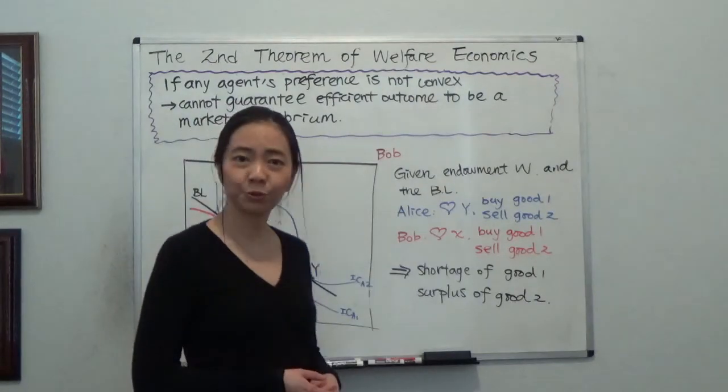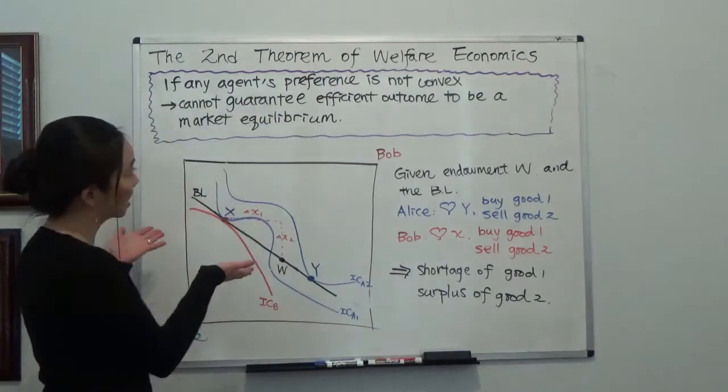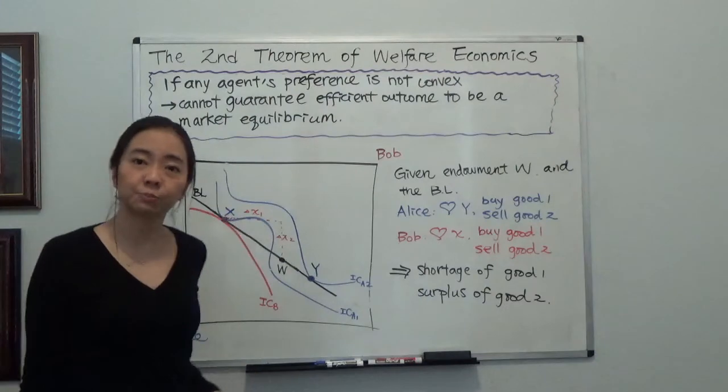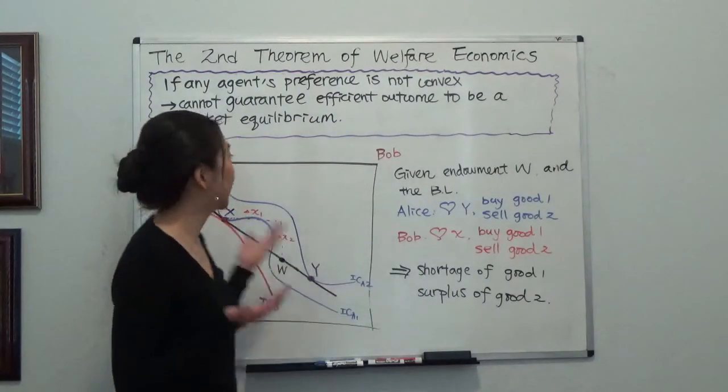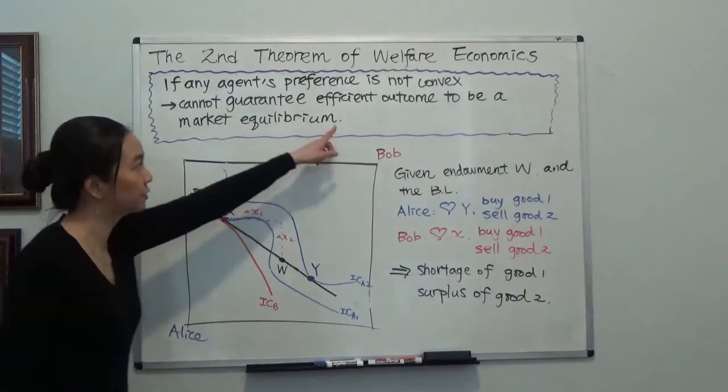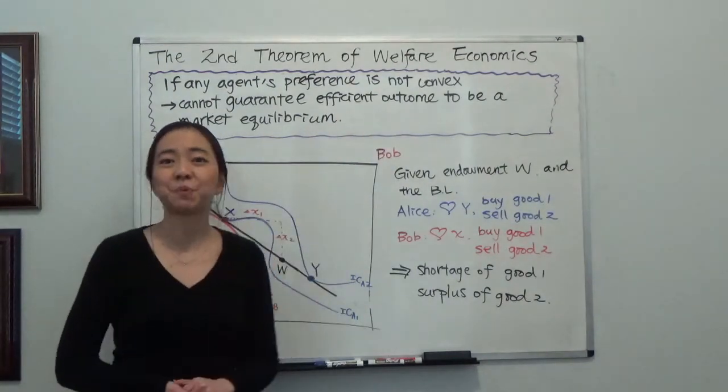And in this clip I'm going to show you, in this economy, if there's any agent's preference that is not convex preference, then we cannot guarantee that a Pareto efficient outcome is also a market equilibrium.